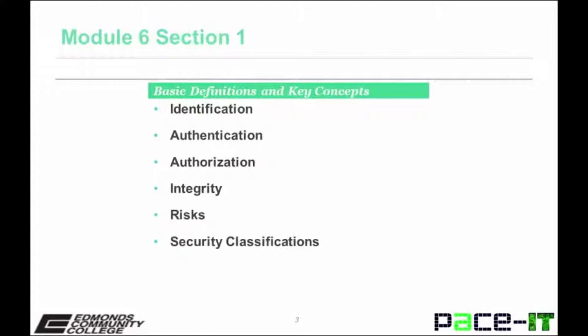Integrity maintains the accuracy and consistency of data in that the data cannot be modified in an unauthorized or undetected manner. Risks are the likelihood that something bad will happen to the data or information asset. Vulnerabilities, which are weaknesses, and threats, which have the potential to cause harm, are examined. An audit is a way to assess risks during the review of security actions and user activities.